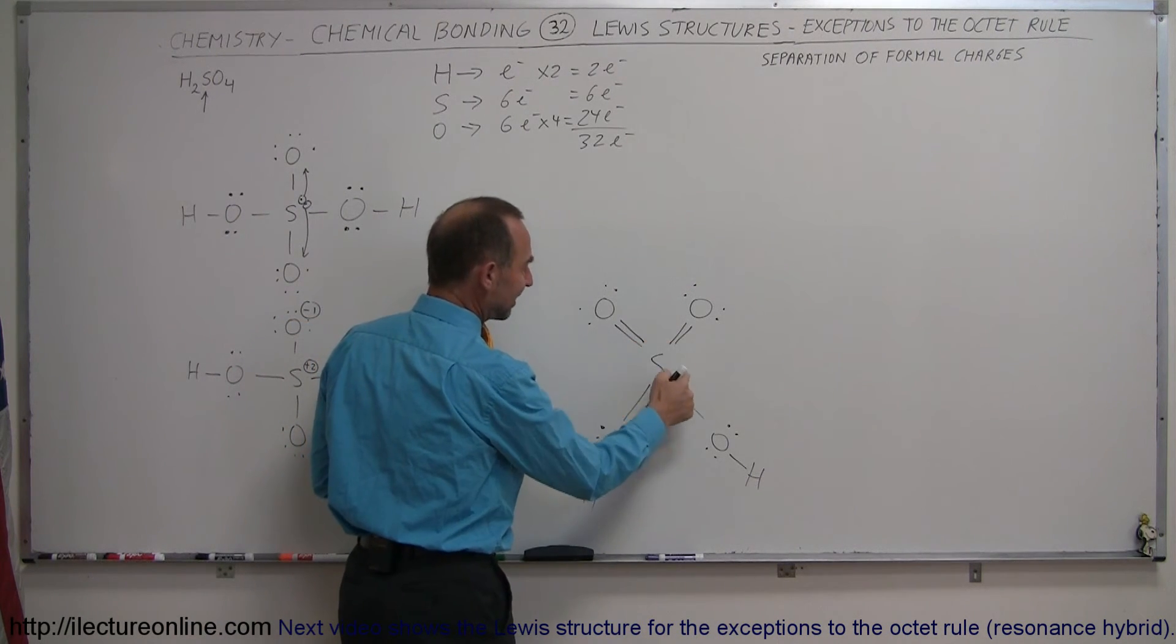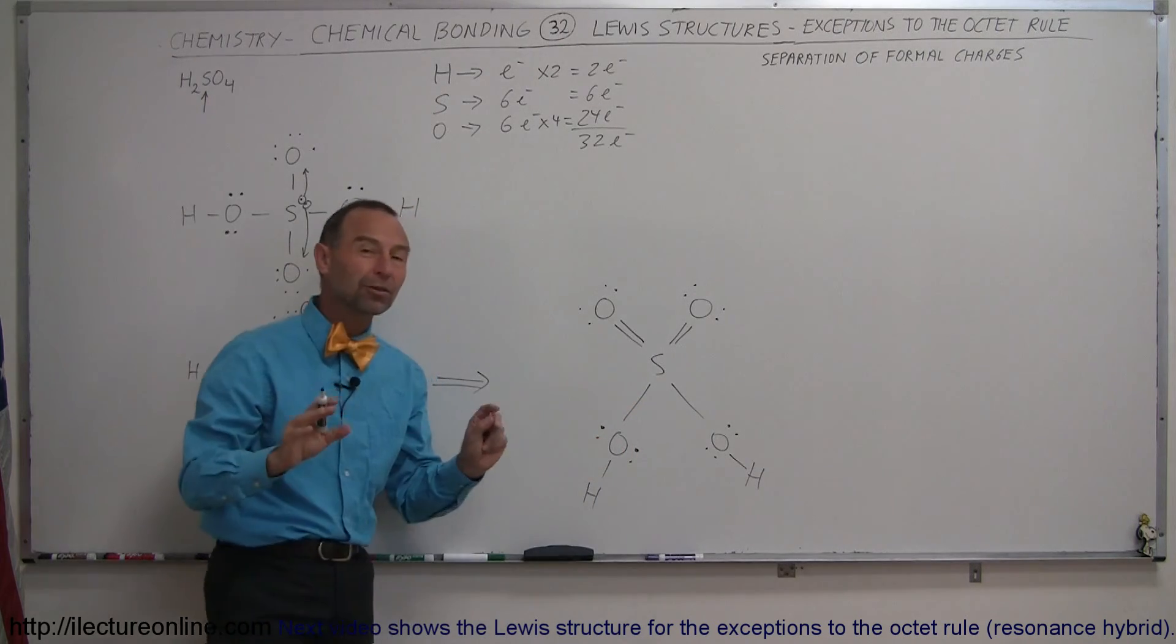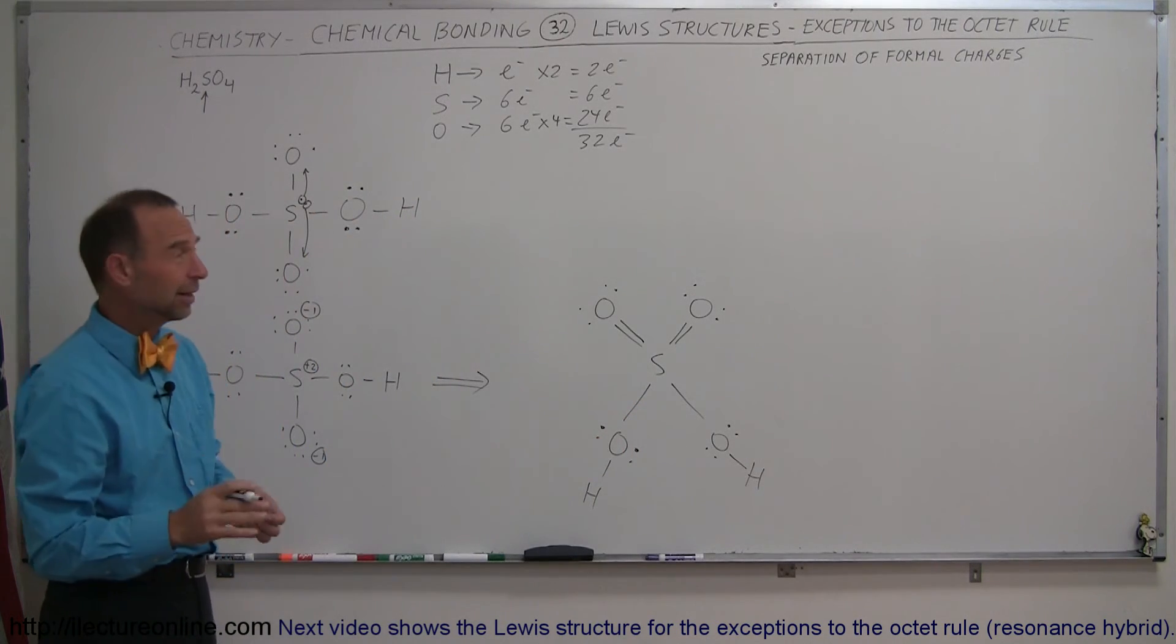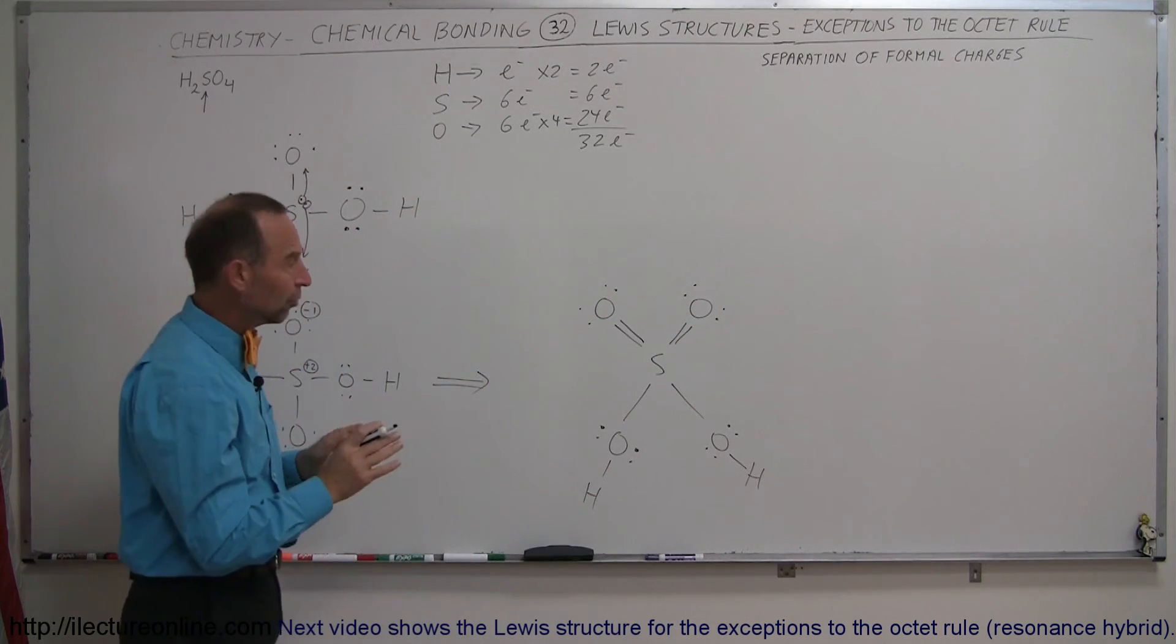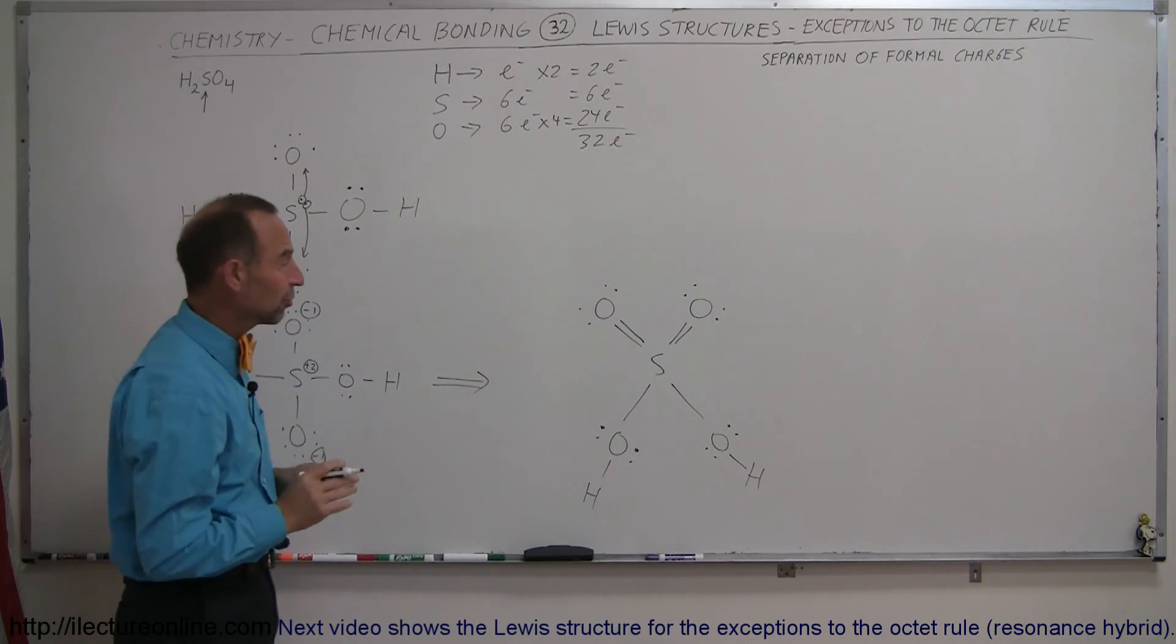The sulfur now has two, four, six, eight, ten, twelve part-time electrons, which is much greater than eight, so the octet rule is not followed. There's another exception in the octet rule, but notice there's no longer a formal separation of charges here.